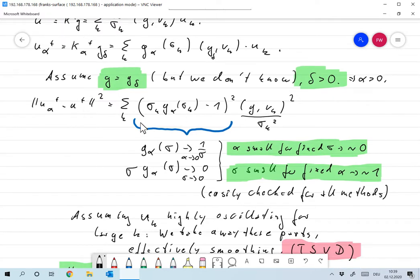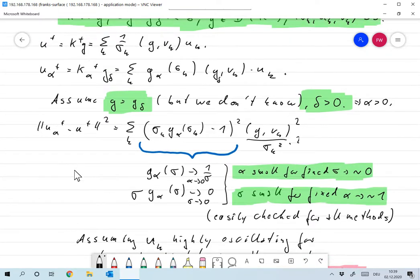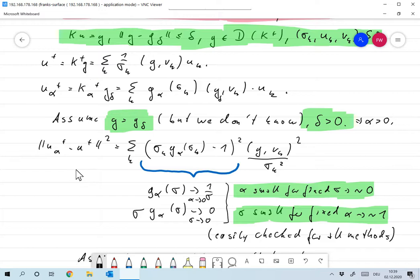In that case although the data is correct we still make a mistake because now we compute u alpha plus according to the formula that we have and that's not the same as u plus. So the difference between u alpha plus and u plus is given by the sum over all k: sigma k g alpha of sigma k minus one squared plus the known term over here.